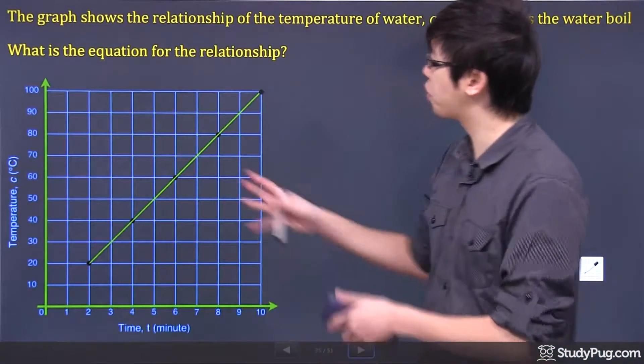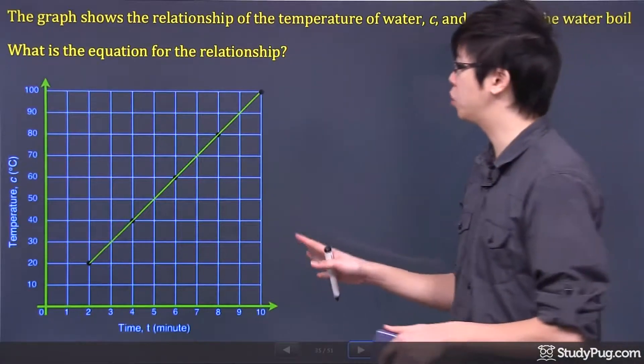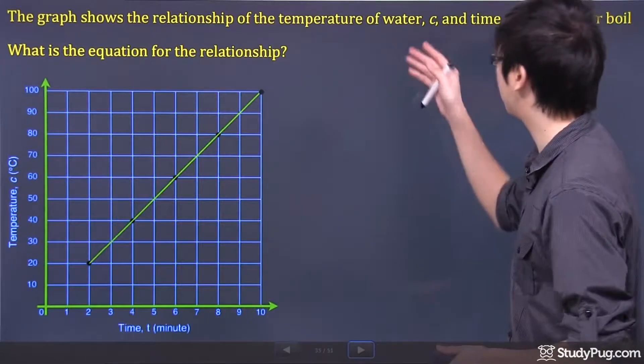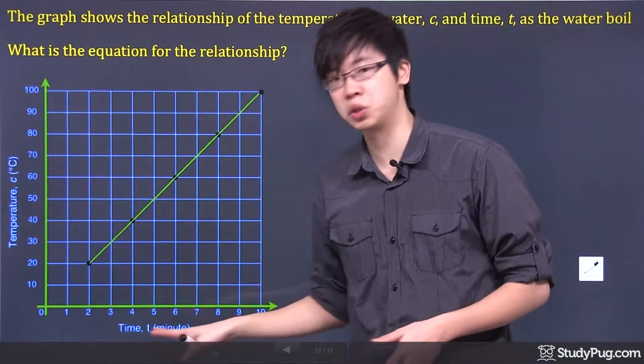Hi, welcome to this question right here. So we have a graph set up for us already, trying to show us the relationship between the temperature in degree Celsius versus the time underneath right here which is in minutes.